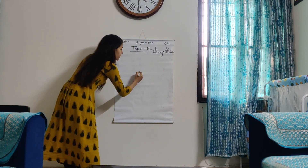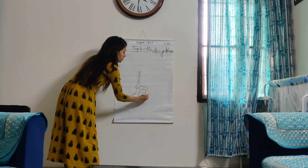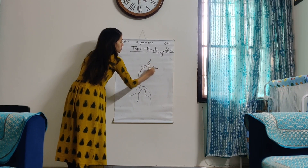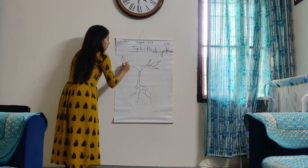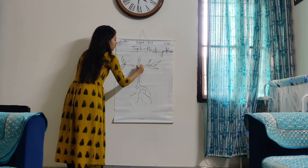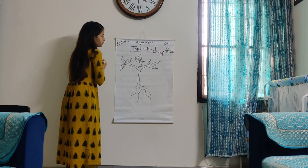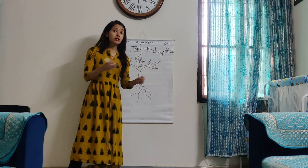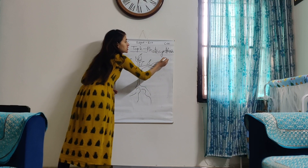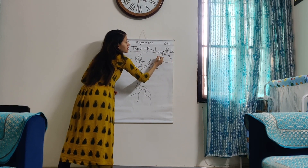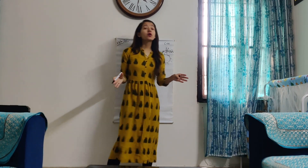But when plants prepare their food, do they need spices? Do they need fire? No. So what do they need to prepare their food? This is the plant. Can you tell me what are the things needed by the plant to prepare their food? So the first thing is sunlight. Sunlight is very important for the plants to prepare their food. For example, we need fire and gas to prepare our food, but plants need sunlight.